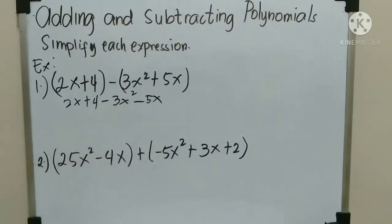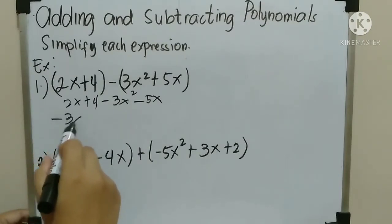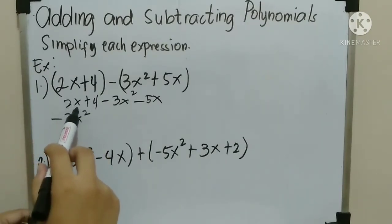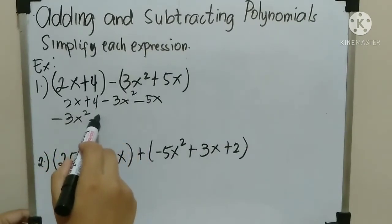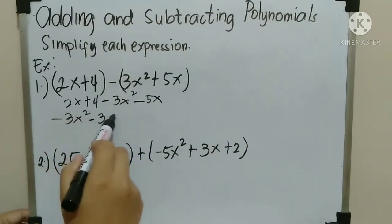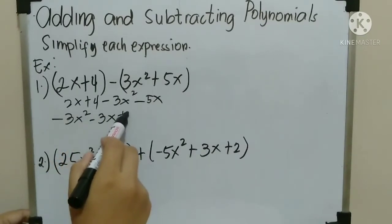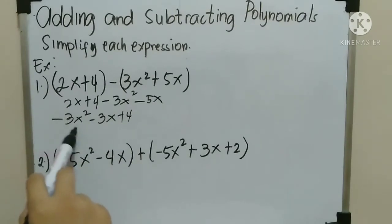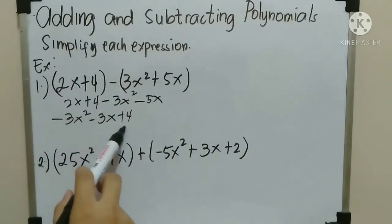And then, combine like terms. Negative 3x squared — copy that. Then, 2x minus 5x — the answer is negative 3x. Then, copy the 4. Therefore, the answer is negative 3x squared minus 3x plus 4.